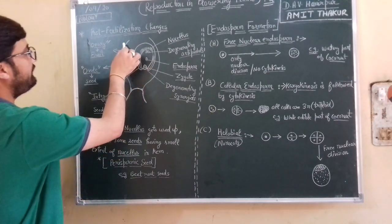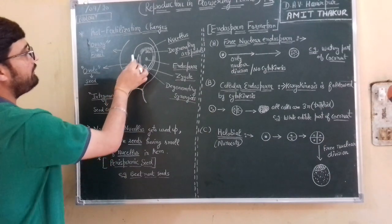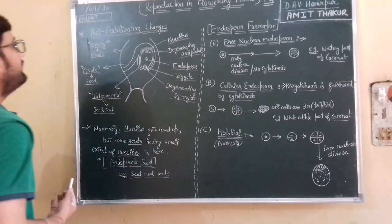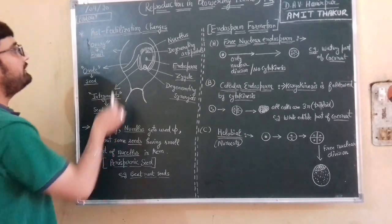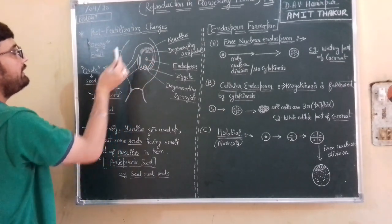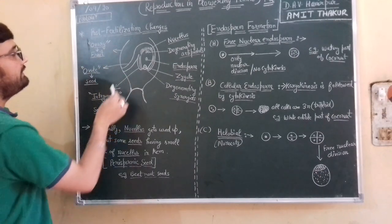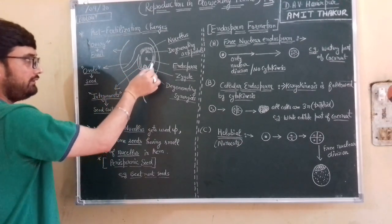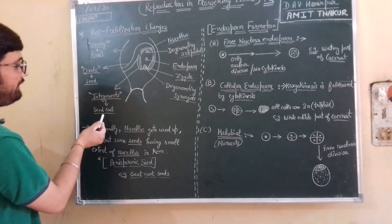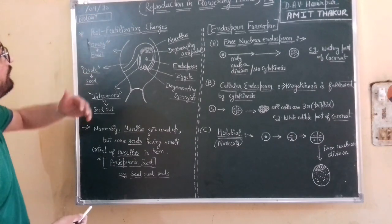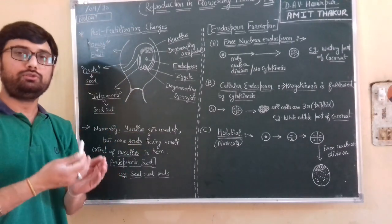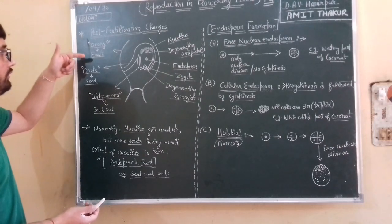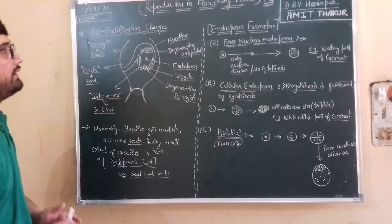Here you can see a structure of the ovary, and inside the ovary you can see an ovule — a proper type of ovule, upside down. After fertilization, this ovary is modified into a fruit, this ovule is modified into a seed, and the integuments are modified into the seed coat. These are the post-fertilization modifications of ovary, ovule, and integuments into fruit, seed, and seed coat.